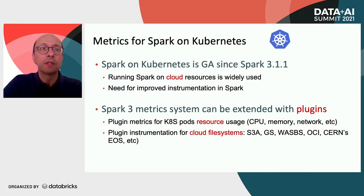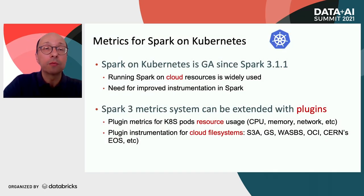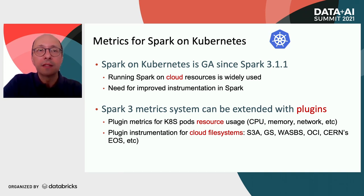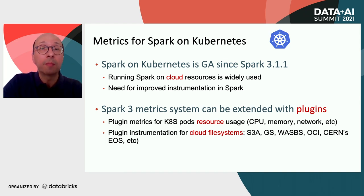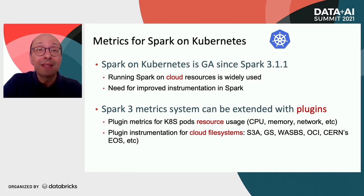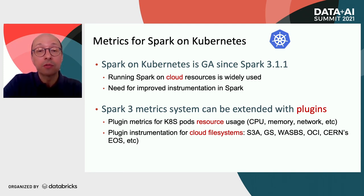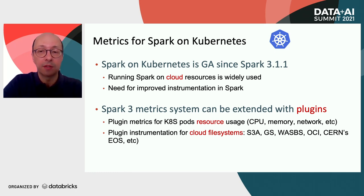Spark is widely used in cloud environments, and there is a need for improved instrumentation in such cases. Rather than adding this instrumentation into Spark core, Spark 3 offers new opportunities with the Spark plugins interface. In this talk, we will discuss plugin metrics for Spark on Kubernetes, where you can measure pod resource usage, and also plugin instrumentation for cloud file systems.